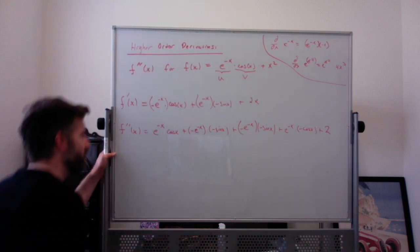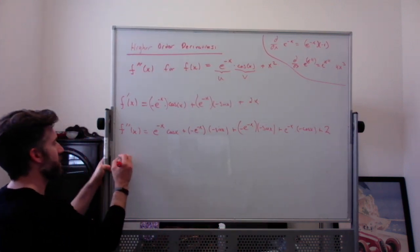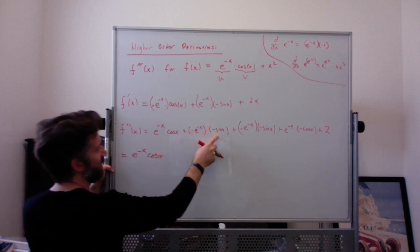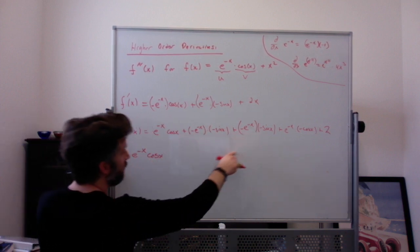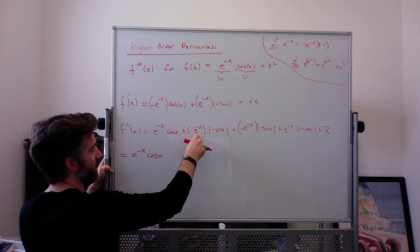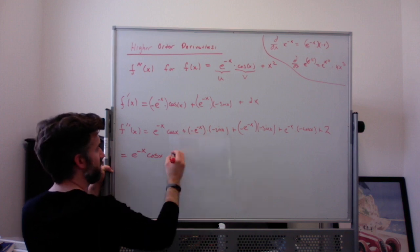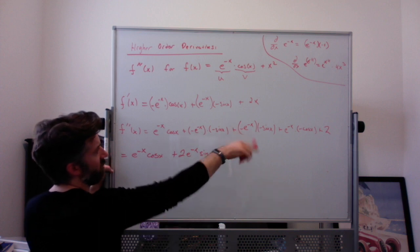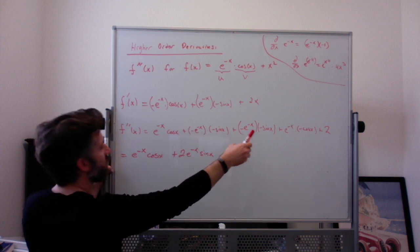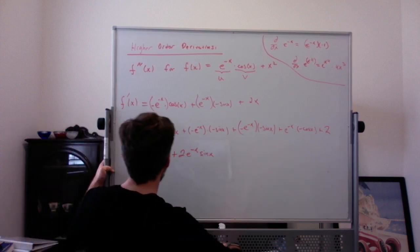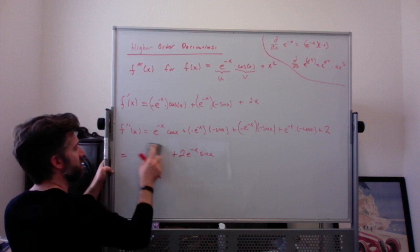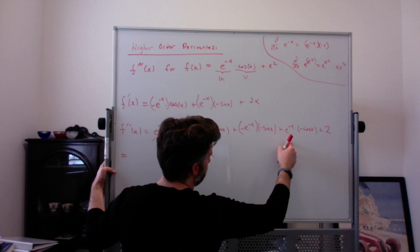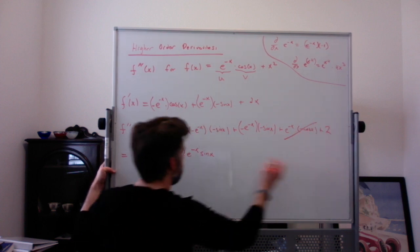On this step, we should simplify. We have e to the negative x cosine of x. A minus of a minus is a plus, so it's plus e to the negative x times sine of x, times 2. And notice that the e to the negative x cosine of x term and the negative e to the negative x cosine of x term cancel out.